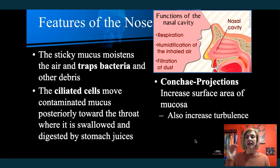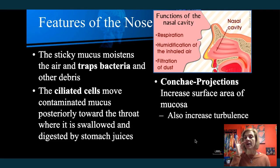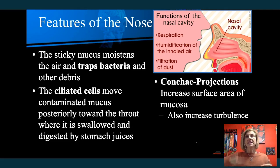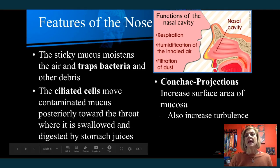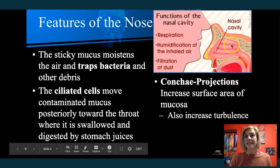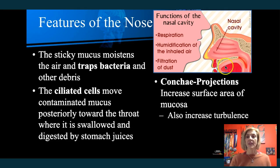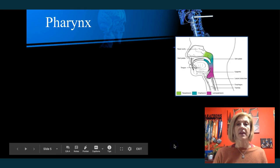We also have three concha. You might remember this from the skeletal system — you have a superior, middle, and inferior concha, which are scroll-like bones. They create a circulation of air, making sure that air comes into contact with the mucus membranes for moistening and the capillaries for warming. You can see the concha in that picture.